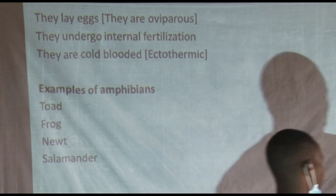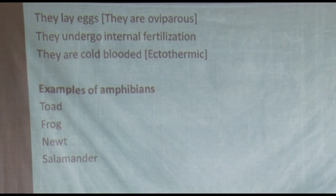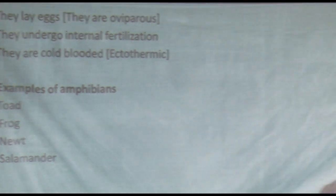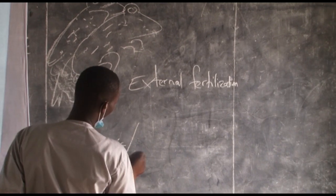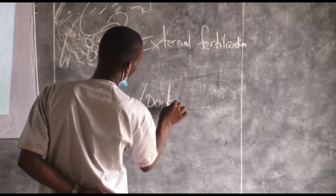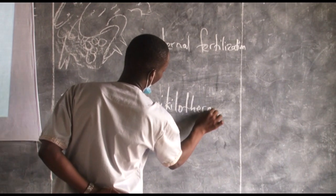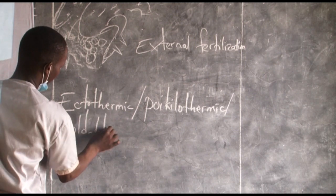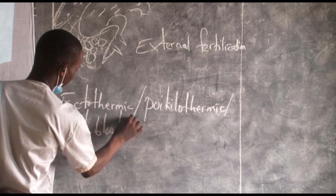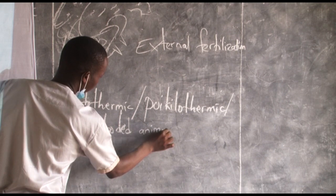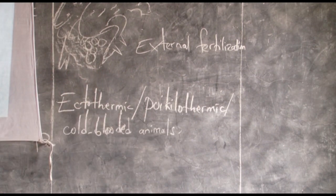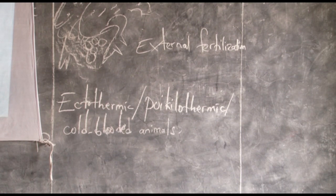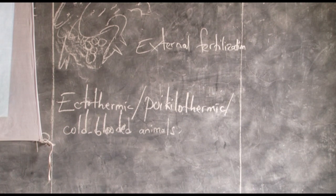These animals can be called ectothermic, poikilothermic, or cold-blooded. These terms all mean the same thing: they are animals whose temperatures can change according to the environment. Once you find such terms, they are all referring to ectothermic, poikilothermic, cold-blooded animals.